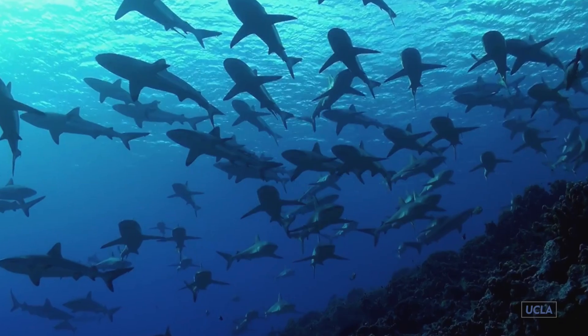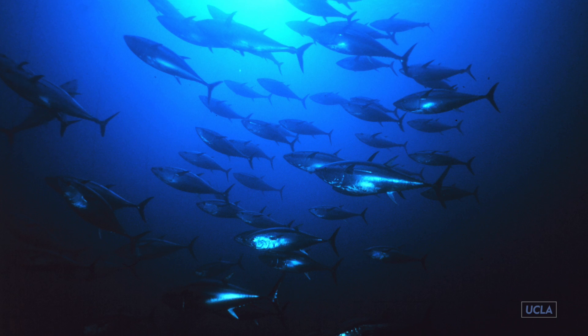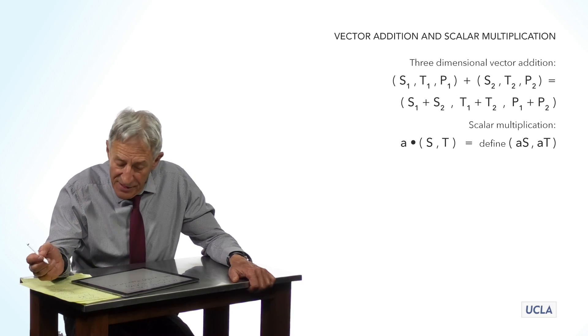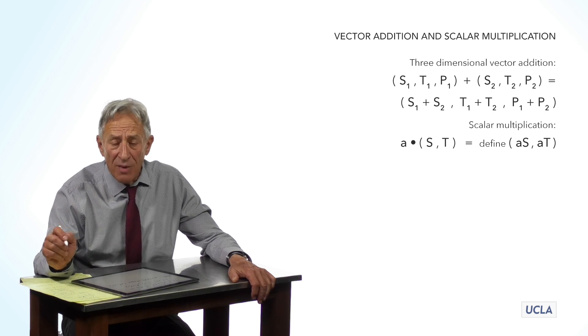And that also makes sense, because if you think about a certain number of sharks and a certain number of tuna, and I say, I want to take a patch of ocean that is twice as big as the previous, I want to multiply it by two, and everything else is homogeneous, what would I expect to see? I would expect to see twice as many sharks and twice as many tuna. So, A times ST is equal to AS, AT.